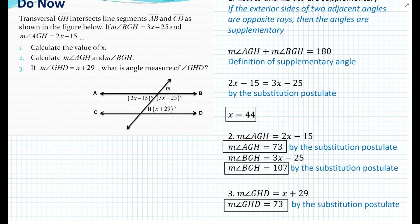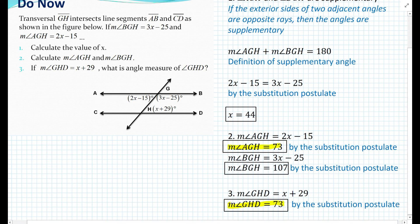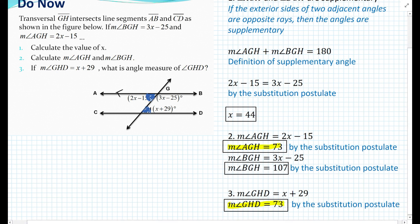Looking at the answers, there's something interesting. The measure of angle AGH and the measure of angle GHD both have the same angle measure of 73 degrees. So angle AGH and angle GHD are equal in measure. Now, if we have two lines cut by a transversal and the alternate interior angles are equal in measure — congruent — then we can say that lines AB and CD are actually parallel. That's the symbol for parallel, and that's the introduction to parallel lines.